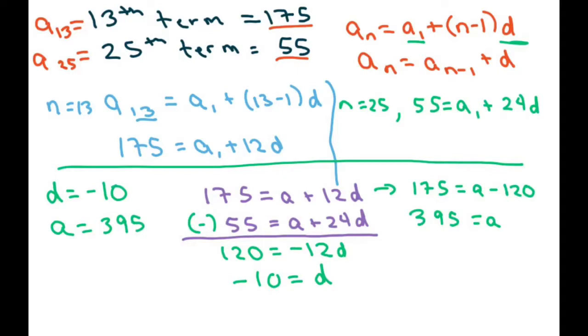So now writing our explicit term, d is negative 10. So our explicit term is a sub n equals my first term plus n minus 1 times d, which is negative 10.